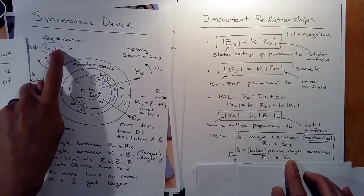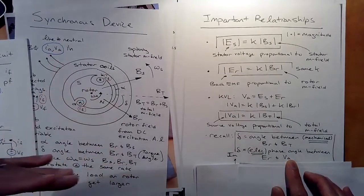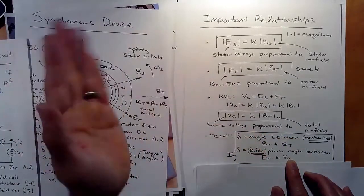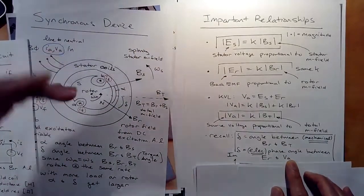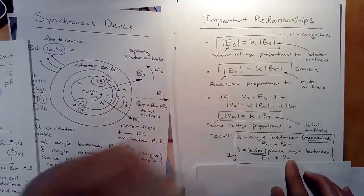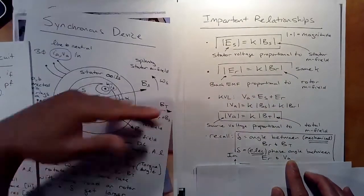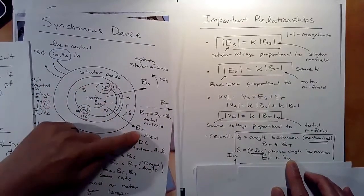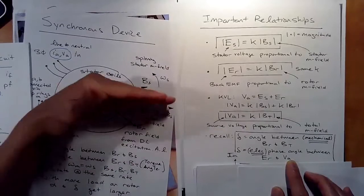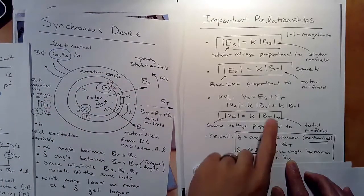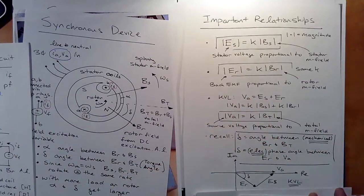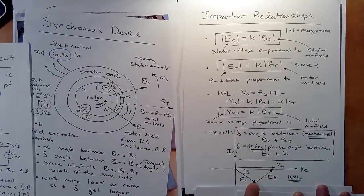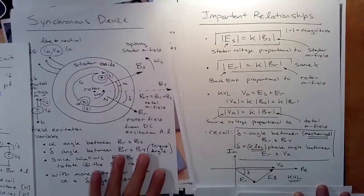Operating with VA at zero degrees on the phasor diagram, with a torque angle such that ER lags VA, we can construct the phasor diagram. BR lags BT, so ER lags VA by delta. By KVL, ER + ES must equal VA, so we draw the vectors to close the loop.